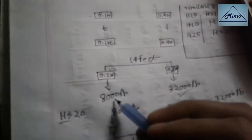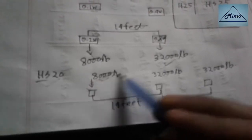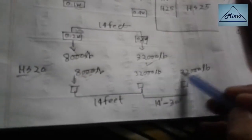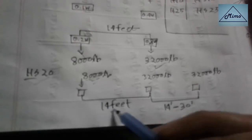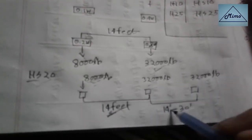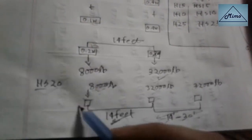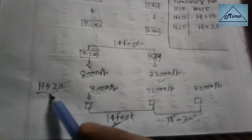So for H20, the rear axle load is 32 kips (or 32,000 pounds) and the front axle is 8 kips. Similarly for HS20, the trailer axle spacing is 14 feet from the drive axle, and the tandem trailer axle spacing varies from 14 to 30 feet, with wheel spacing of 6 feet.